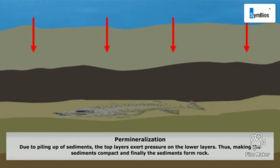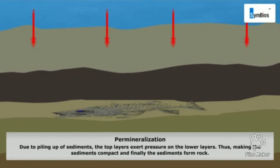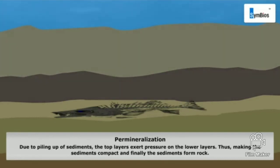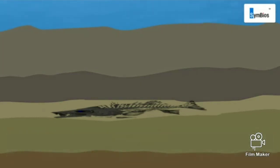Next occurs permineralization. Due to the piling up of sediments, the top layers exert pressure on the lower layers, making the sediments compact, and finally the sediments form rock. With time, the minerals dissolve the outer shell of the fish. Over years, the entire fish shell is replaced and the rock takes the exact shape of the fish.